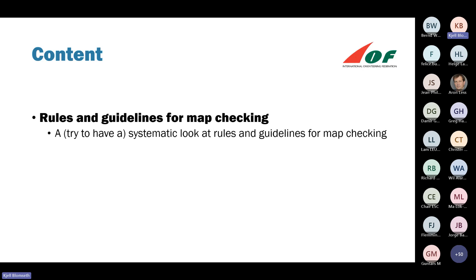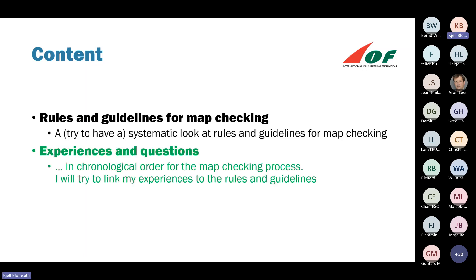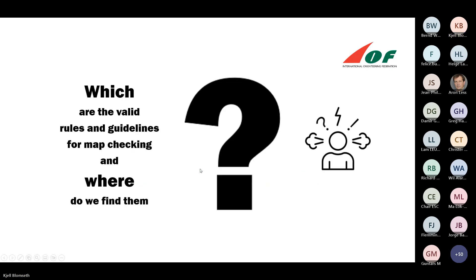I would try to have a systematic look at the rules and guidelines, and follow up in a kind of chronological order the map checking process. When I'm in the experiences and questions section, you will find the text in green. When I prepared for this presentation, I had a big question mark as to what is valid or not — and I still have a big question mark. I think it's not easy to find on the web pages which documents are valid and which are not. But I will come back to that — that is kind of the story behind this presentation too.